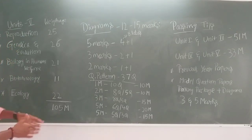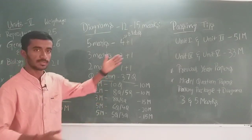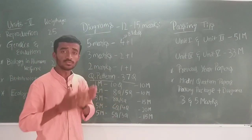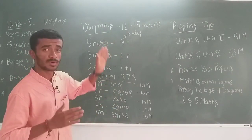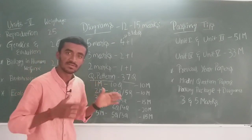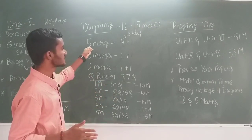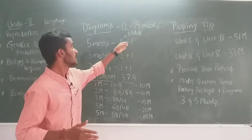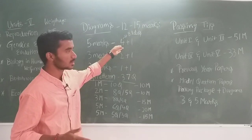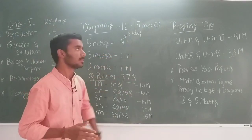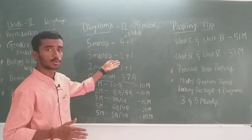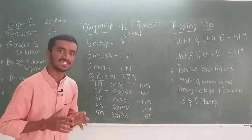Now, passing — how do you pass? First, diagrams. You get 12 to 15 marks from biology diagrams. For a 5-mark question: 4 marks plus 1 mark for 8 labels. For a 3-mark question: 2 marks plus 1 mark for 4 labels, and 1 mark for a neat diagram.